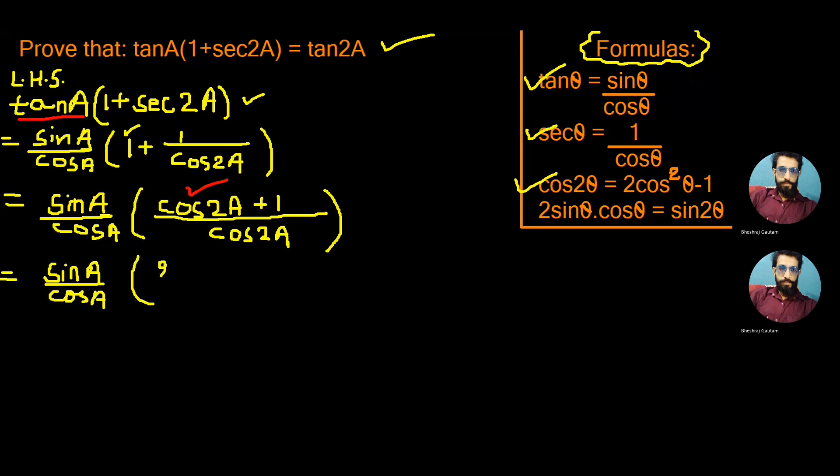We can write 2 cos² A minus 1 and plus 1 from above. So we divide it by cos² A which was our LCM. Canceling this minus 1, we can write sin A by cos A.